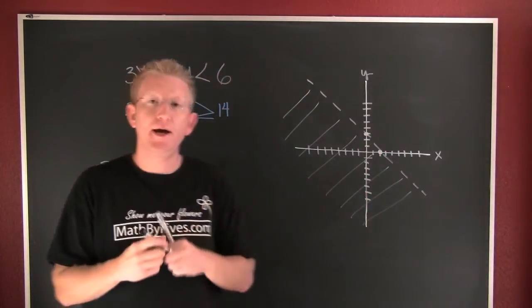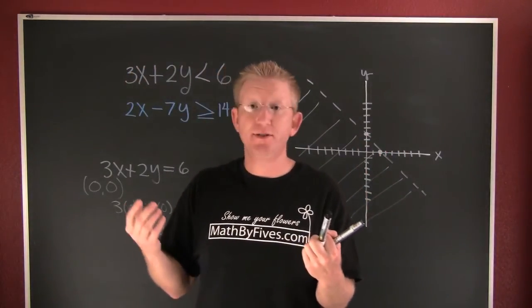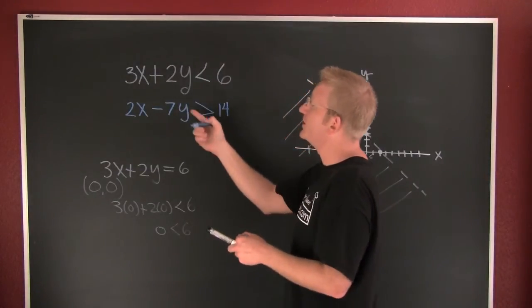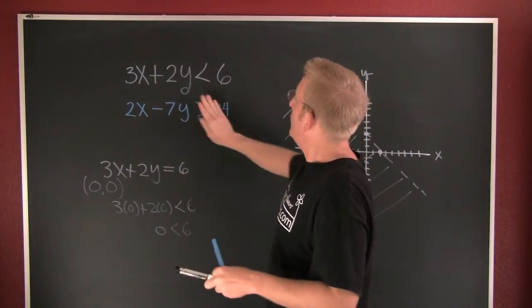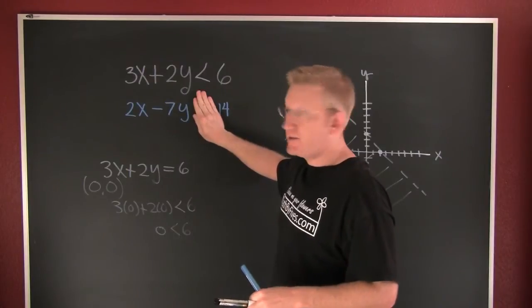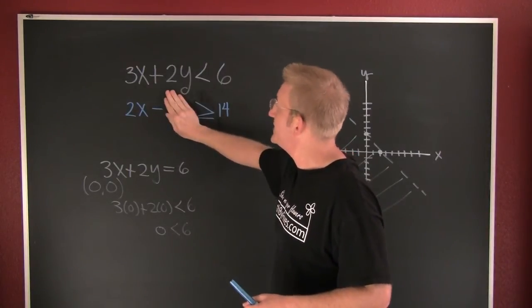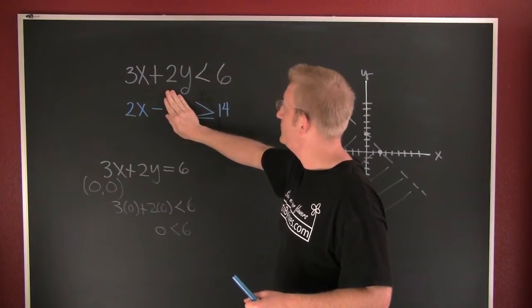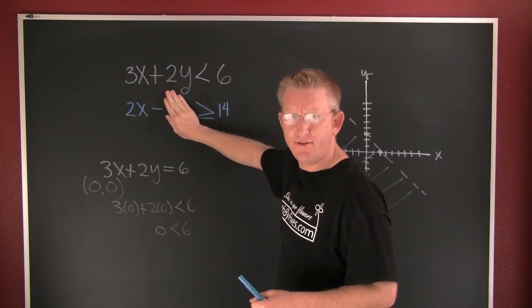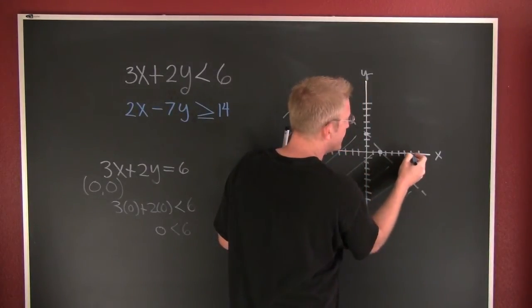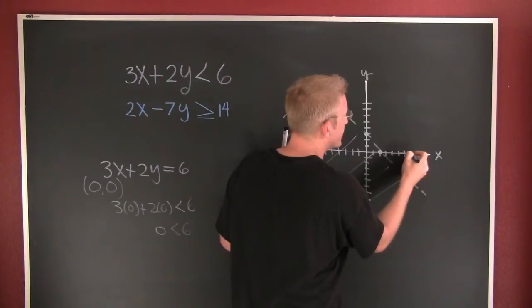All right, let's go through and do the same thing with blue. On my blue one, I'm going to graph equals. Once again, this one appears to lend itself to x and y intercepts. If I let x or y be zero, x is seven, so I can put a dot right there.